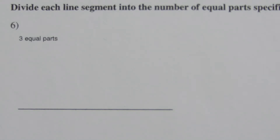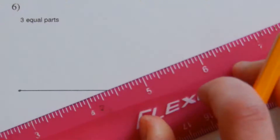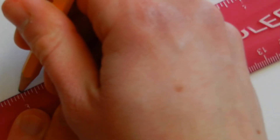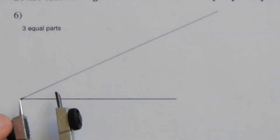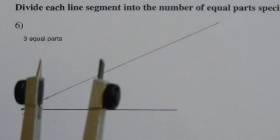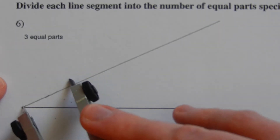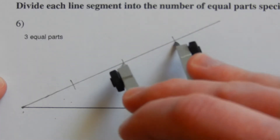On the second page, we're dividing each line segment into the number of equal parts specified. For number six, we're dividing into three equal parts. To divide a line into an equal number of segments, we start by extending a line upward off one endpoint. Then we pick a compass measurement — roughly eyeballing a third of the length — and mark that distance three times along that extended line: once, twice, and three times.